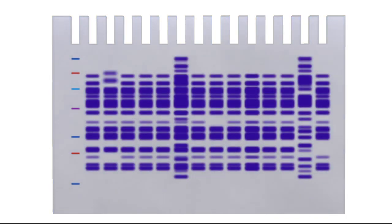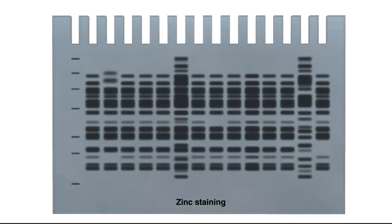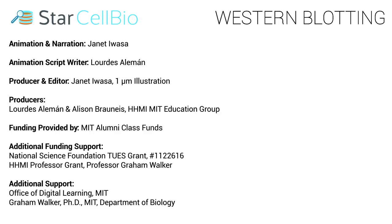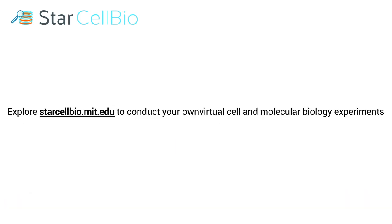Gel staining is typically done to visualize all of the proteins present. This is especially helpful if we need to isolate and purify proteins with a particular molecular weight. Some commonly used methods for staining polyacrylamide gels are Coomassie blue, silver staining, and negative staining using zinc compounds.